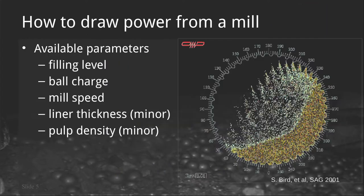If an operator wants to maximize power draw from the mill, the available levers are: maximizing the filling level in the mill; maximizing the ball charge, taking up volume with very dense steel instead of less dense rock; and changing the mill speed, though there are some issues with that for SAG and BAG milling. Other relatively minor factors include liner thickness — as the liner wears and becomes thinner, more volume is available for charge, causing power draw to rise slightly. Pulp density can also have a small effect by changing pulp viscosity and causing the kidney to rotate a bit, drawing more torque.